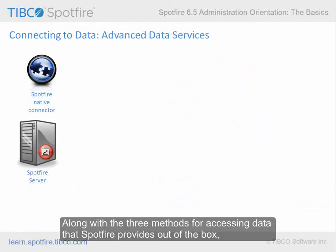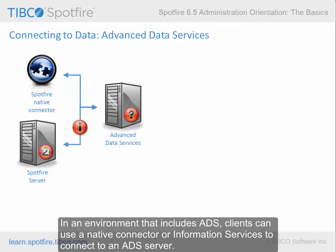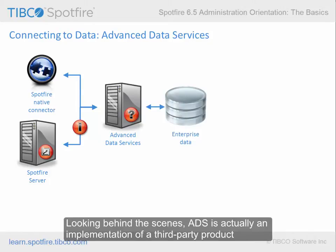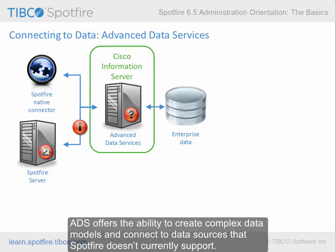Along with the three methods for accessing data that Spotfire provides out of the box, organizations can also implement an add-on product called Spotfire Advanced Data Services, or ADS. In an environment that includes ADS, clients can use a native connector or information services to connect to an ADS server. ADS then connects to the data source and returns the required data to Spotfire. ADS is actually an implementation of a third-party product called Cisco Information Server, formerly known as Composite Information Server. ADS offers the ability to create complex data models and connect to data sources that Spotfire doesn't currently support.